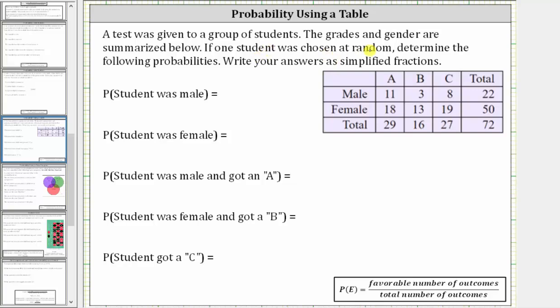A test was given to a group of students. The grades and gender are summarized below. If one student was chosen at random, determine the following probabilities and give the answers as simplified fractions.